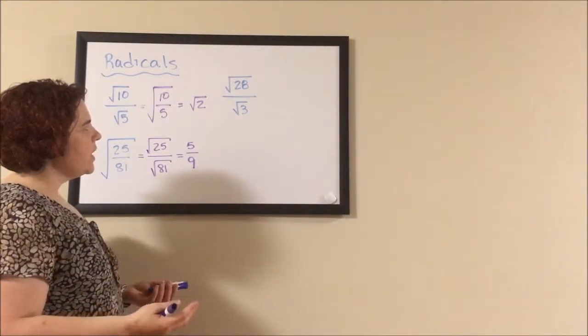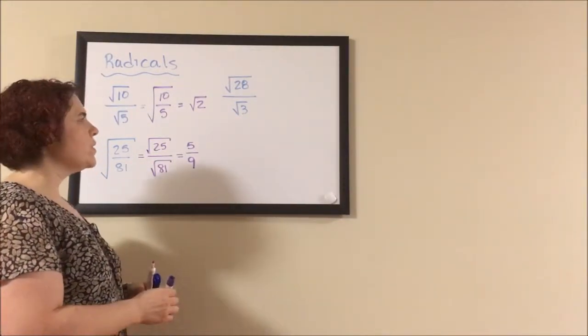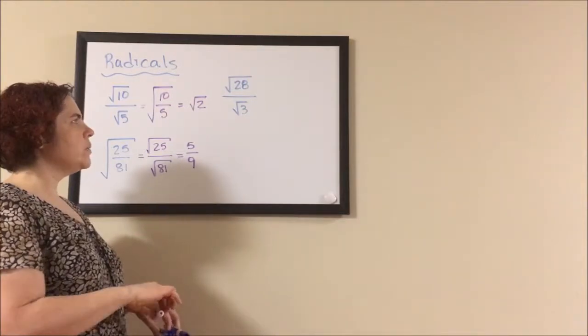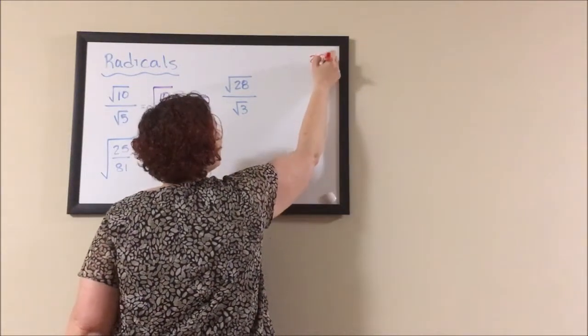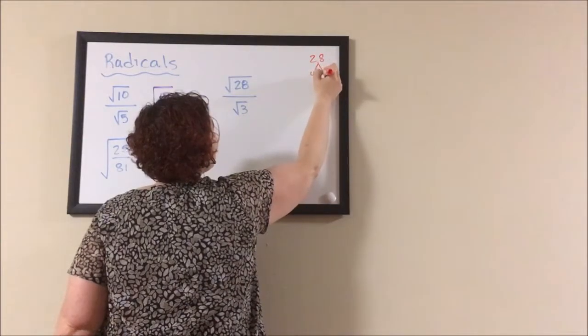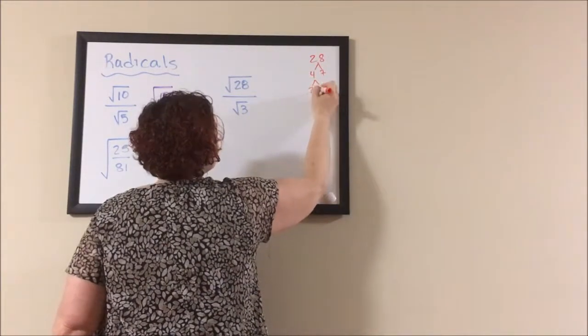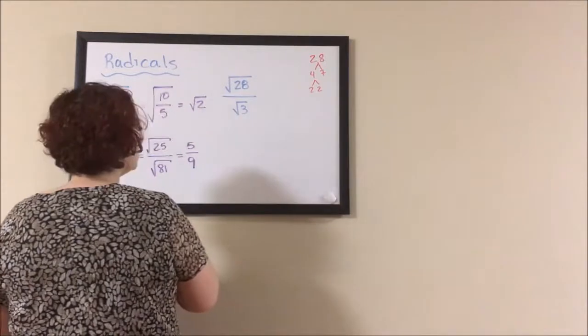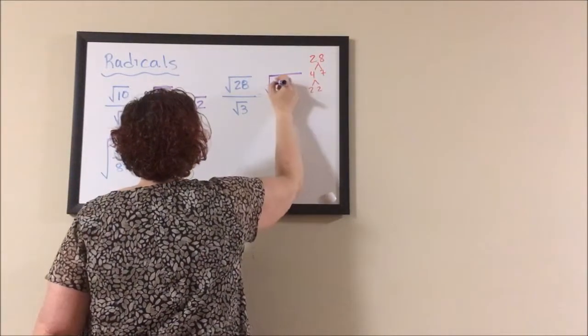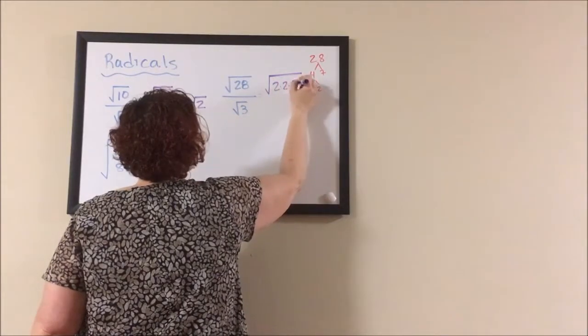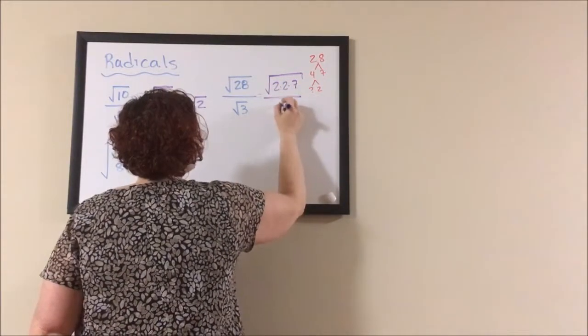On my third example, I have the square root of 28. For the square root of 28, I'm going to do a little bit of prime factorization. So I take my 28. This is 4 times 7, 2 times 2. So this becomes the square root of 2 times 2 times 7 divided by the square root of 3.